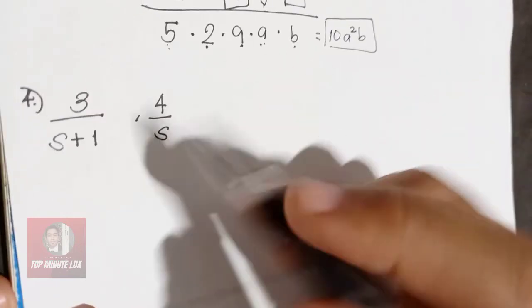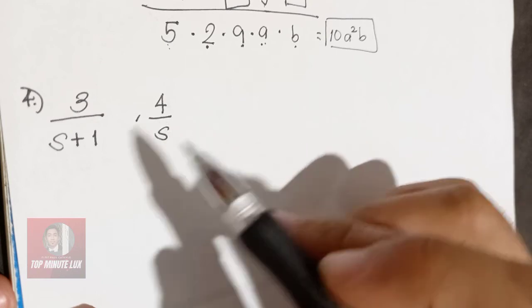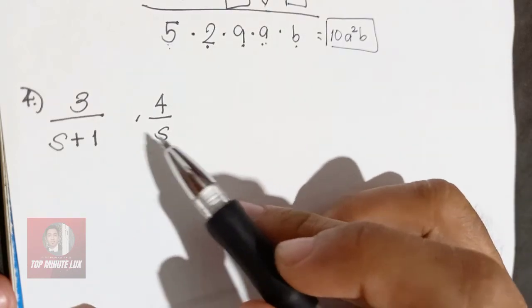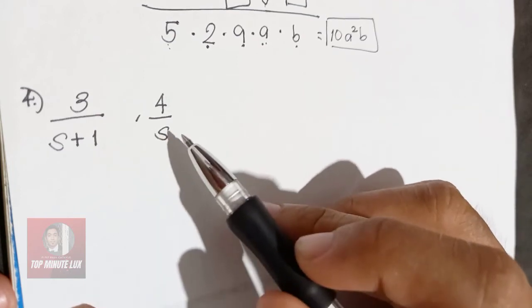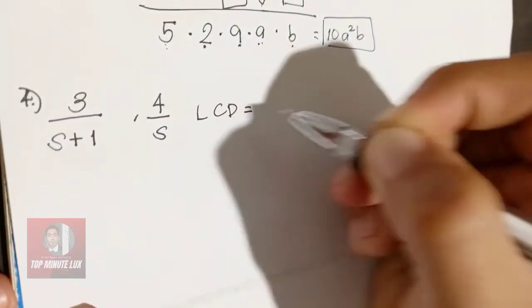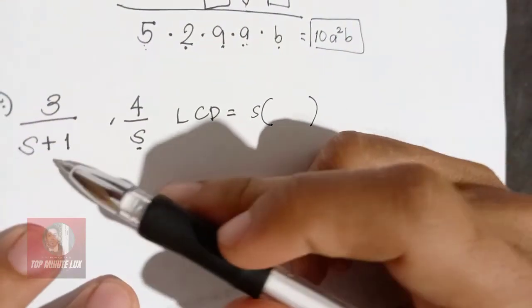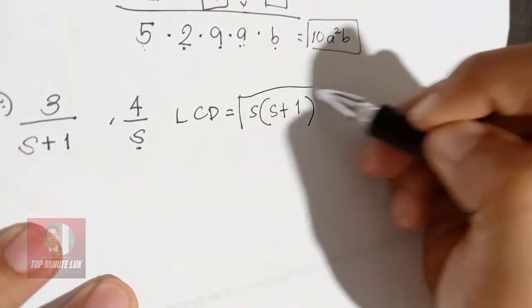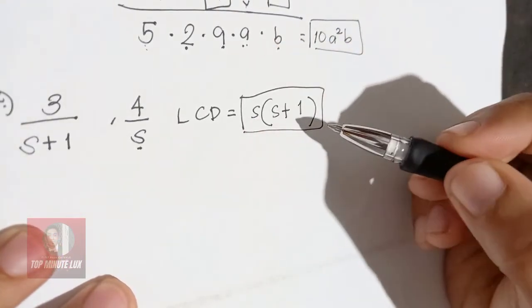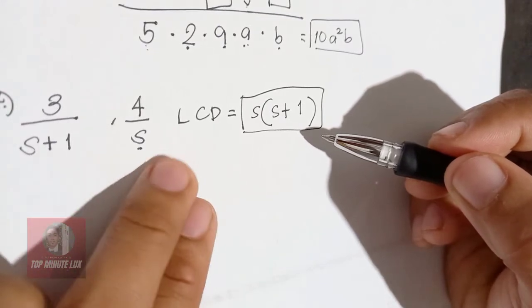Number 4 example. 3 over S plus 1, and 4 over S. If you have encountered this kind of denominators, all you need to do is to copy. The LCD is, copy the S, open close parenthesis, copy the S plus 1. This process is only for this kind of denominators, S plus 1 with S.